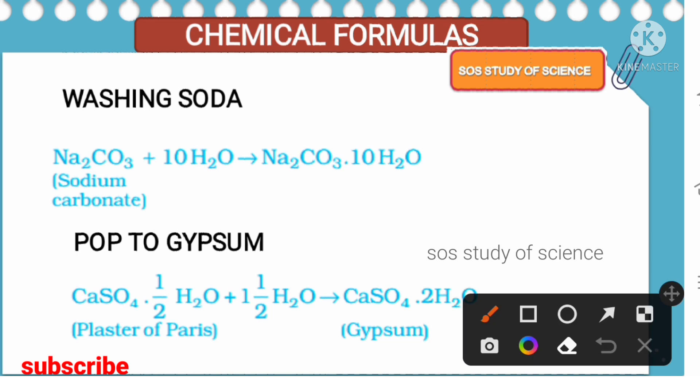After crystallization, 10 molecules of water get attached to form the complete washing soda — Na₂CO₃·10H₂O. So to get complete washing soda, you must attach 10 molecules of water to Na₂CO₃ through crystallization. The complete washing soda formula is Na₂CO₃·10H₂O.